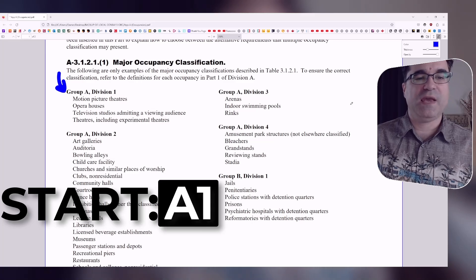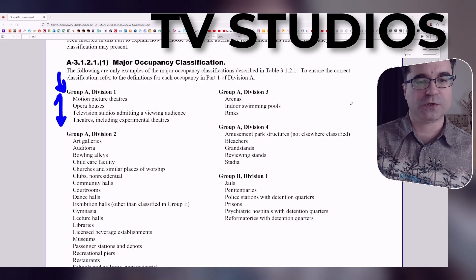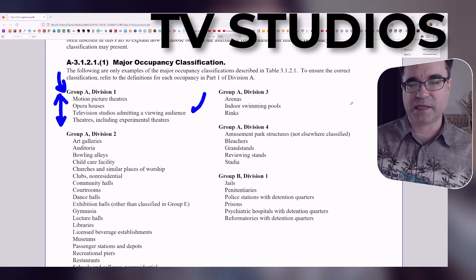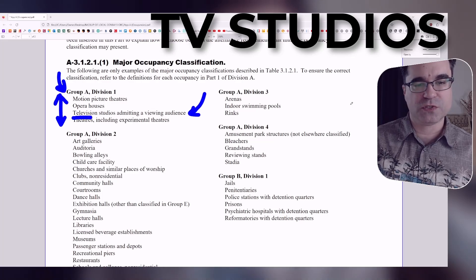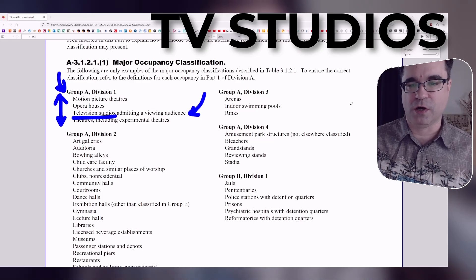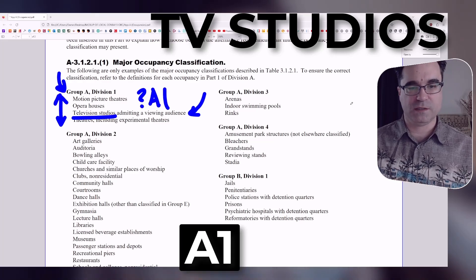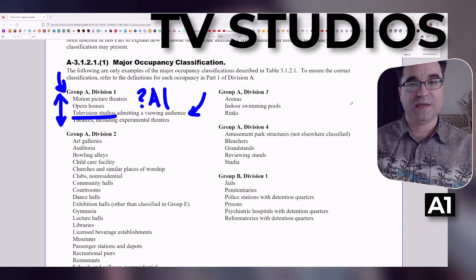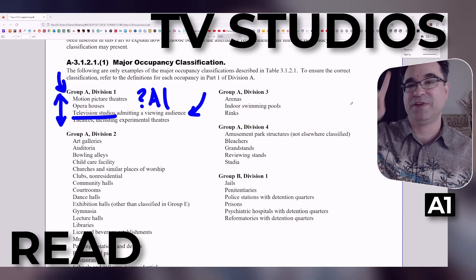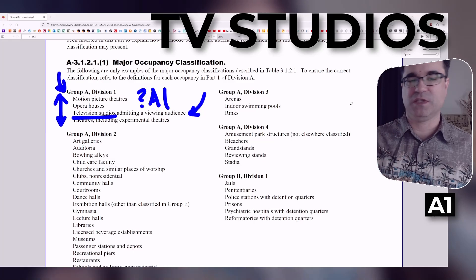We're going to start with A1 and see if we can find television studios. We're going to read everything. It's in alphabetical order. And look at that. Right off the bat, I find something that has the word television studio. This one says admitting a viewing audience. So it's a maybe. It's a possibility that it could be an A1 major occupancy. Are we done? No, definitely not. And that's because we haven't read everything all the way to F3. So we continue.